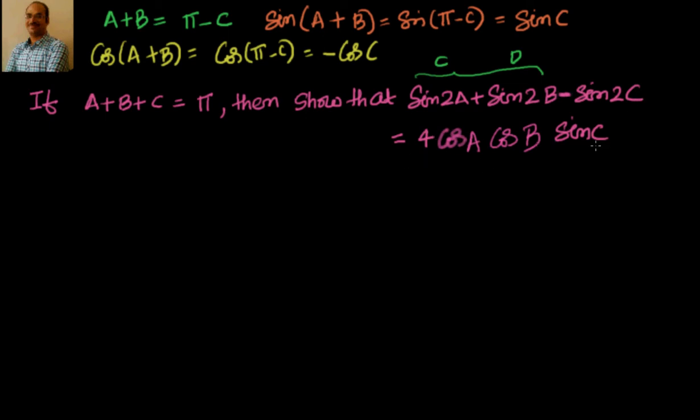it is equal to 4 sin a sin b sin c. And I requested you to try this sin 2a plus sin 2b minus sin 2c. If you solved it and you got 4 cos a cos b sin c then you are doing perfectly fine.